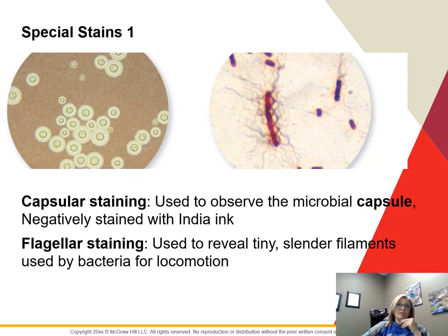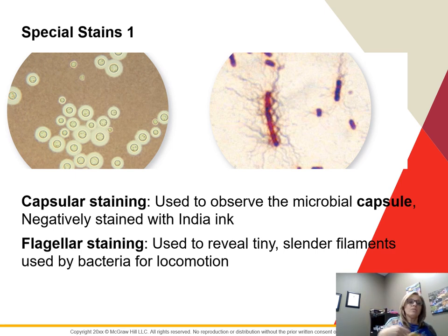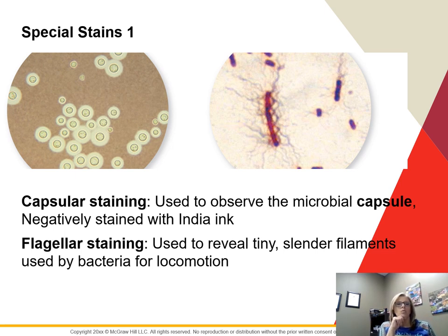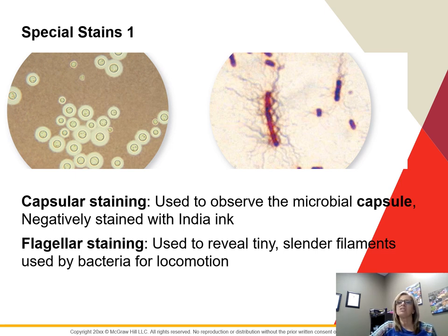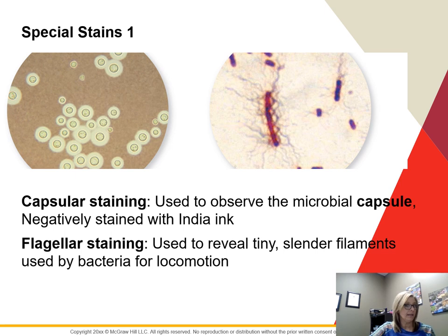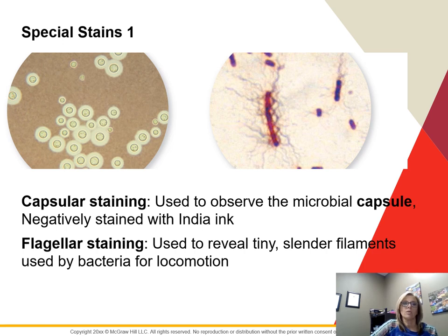We also have special staining methods for structures like capsules and flagella that don't show up in regular stains. Capsular staining uses a negative stain called India ink to reveal the protective layer surrounding cells of bacteria and some fungi. Flagellar staining reveals the flagella bacteria use for locomotion and how many they have.